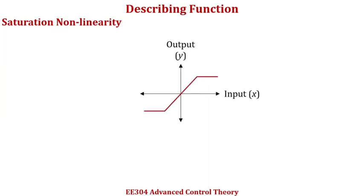We will start off from the very basic input-output characteristics of saturation nonlinearity as shown in this figure, where the x-axis is the input and y-axis is the output. This particular corner has an x value of m, and similarly this particular corner has an x value of minus m. The input-output characteristics is symmetric with respect to the origin.